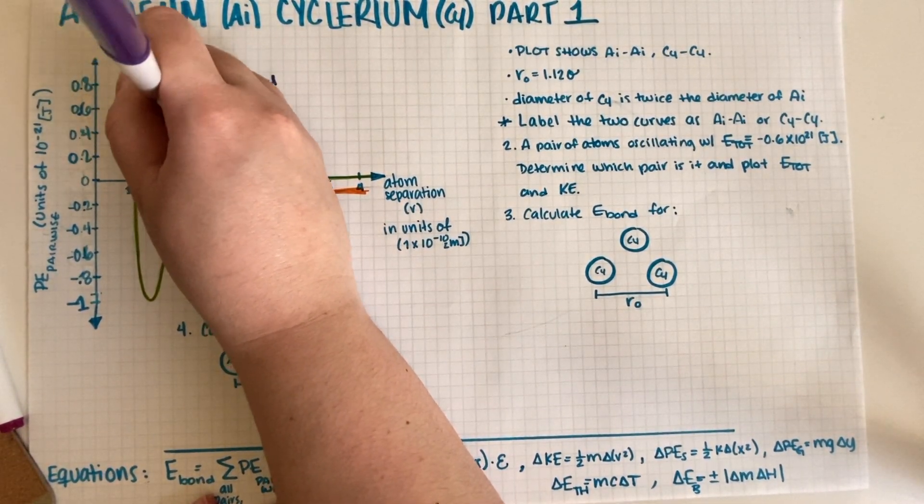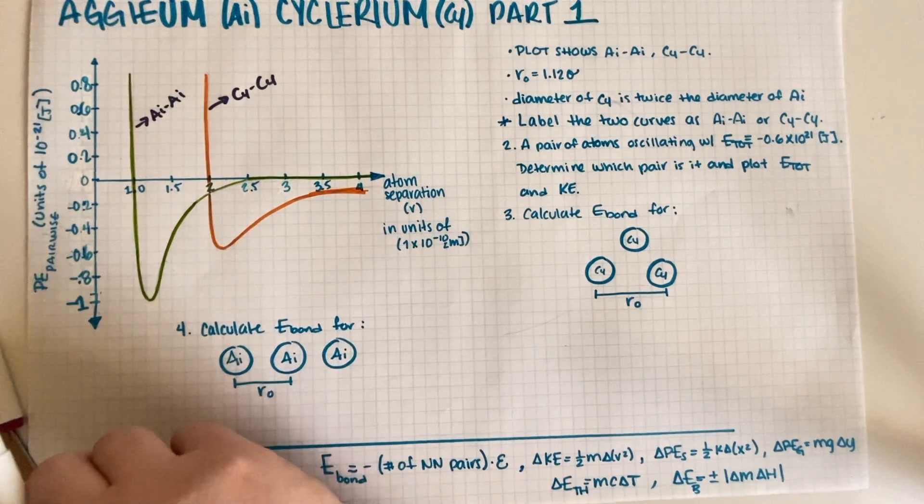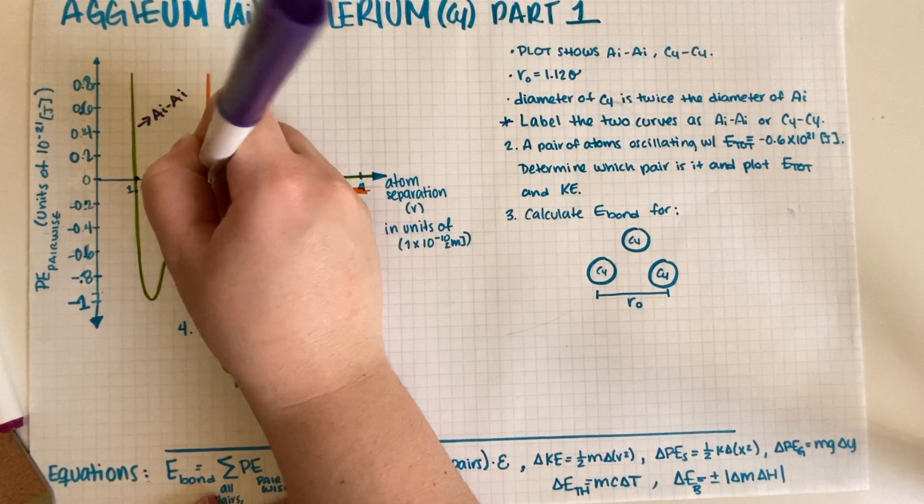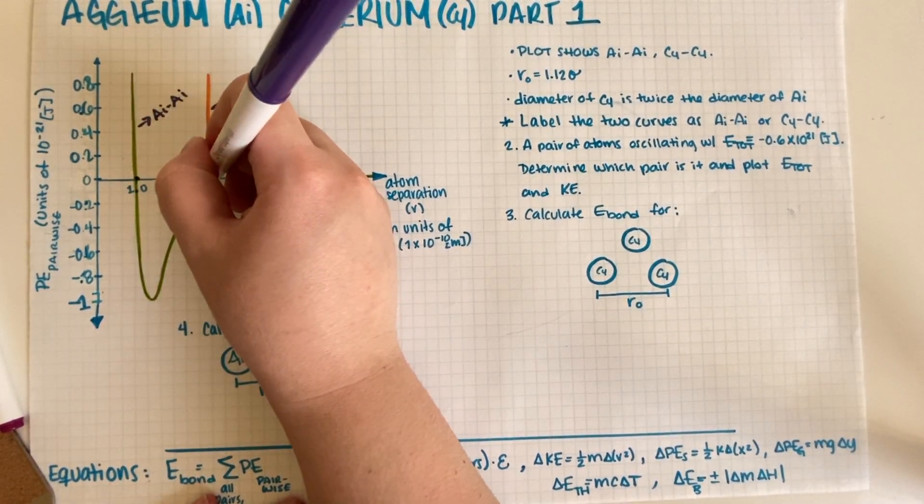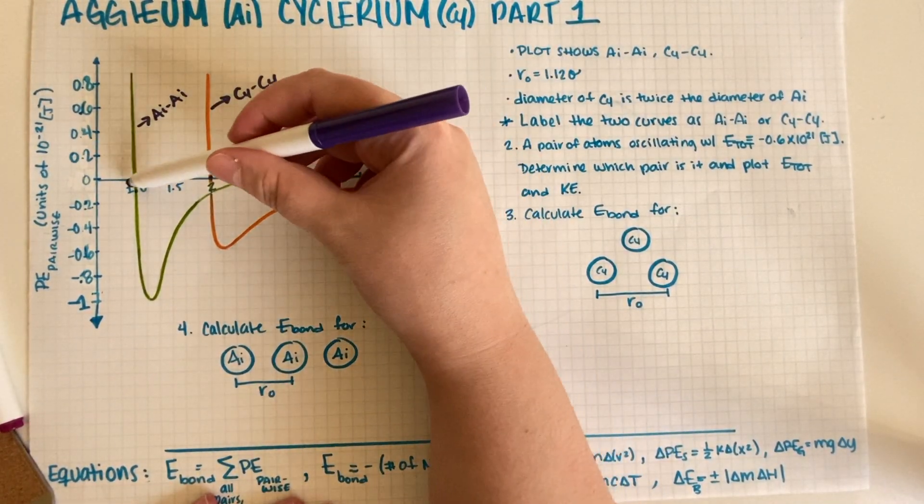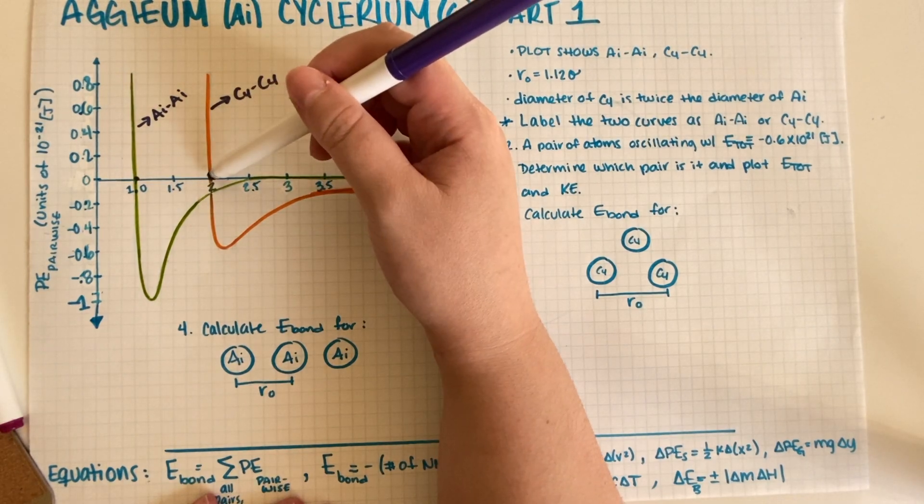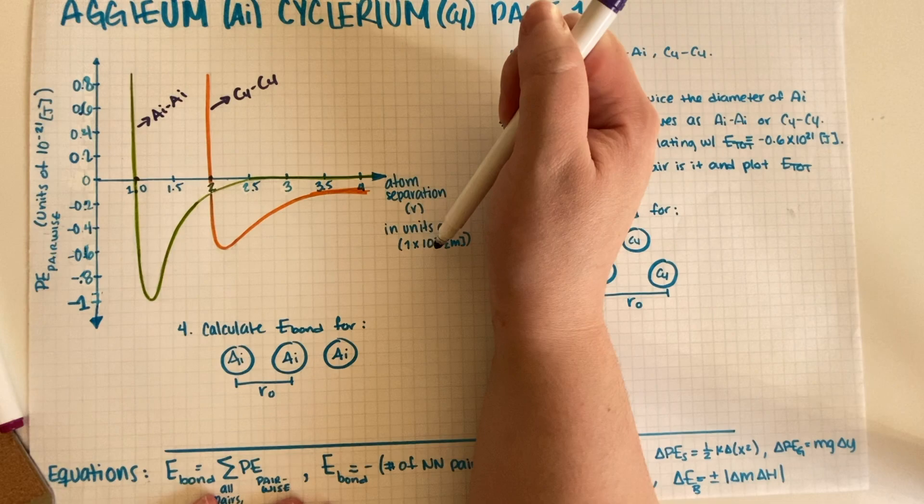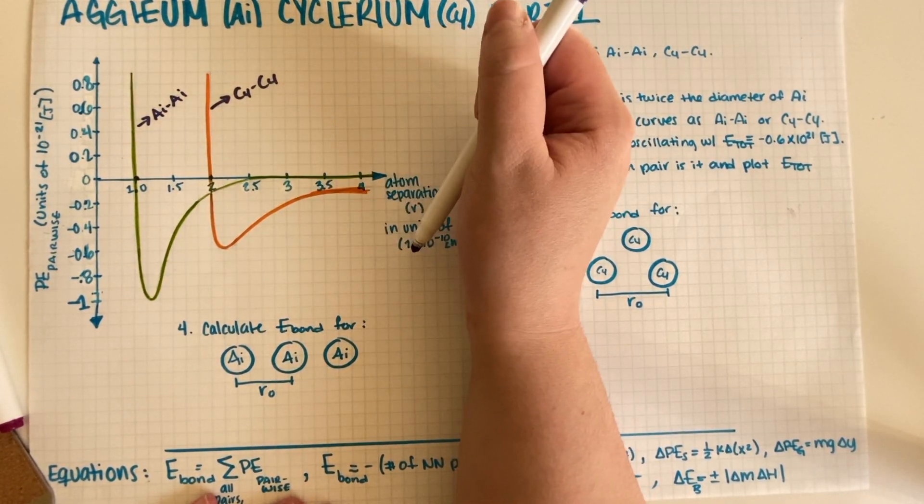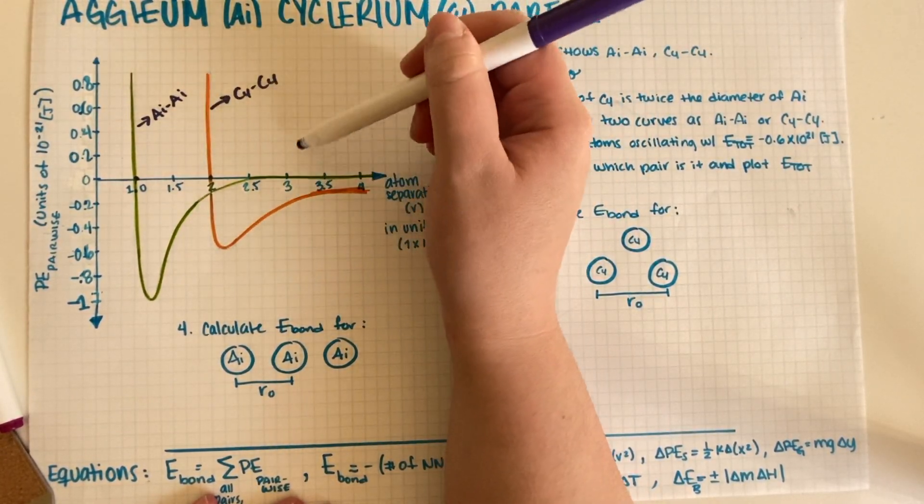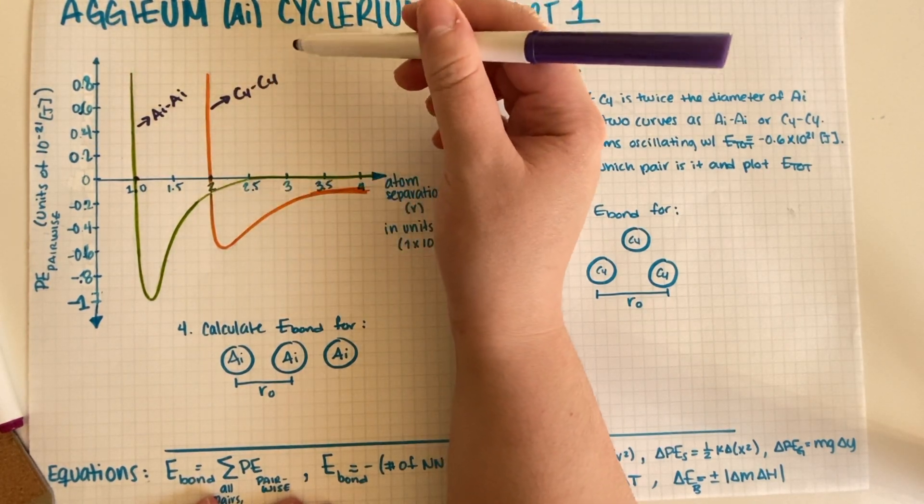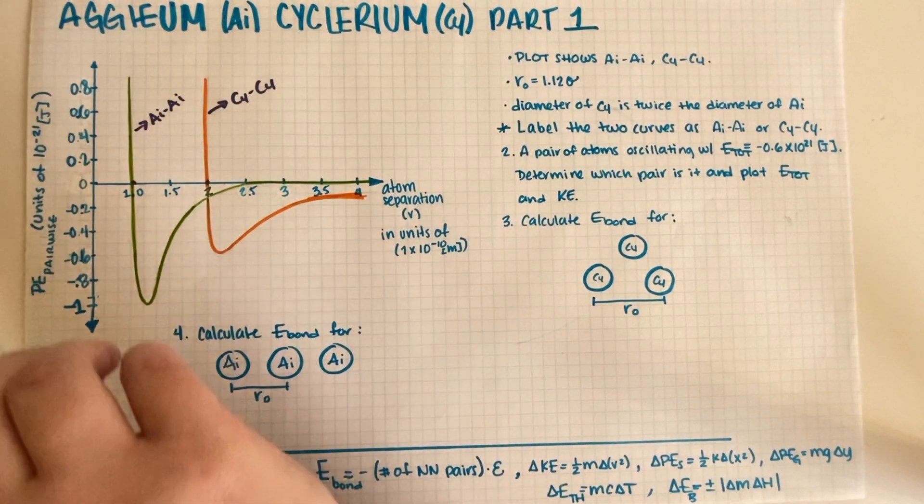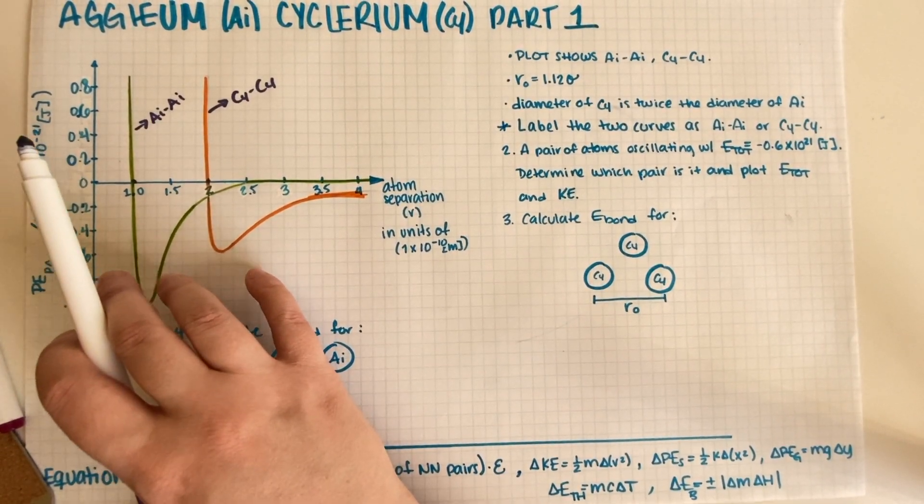How do I know? Well, the diameter of the atoms is where they cross the x-axis. So this one crosses at one angstrom, this one crosses at two, so that must mean that this one is greater.